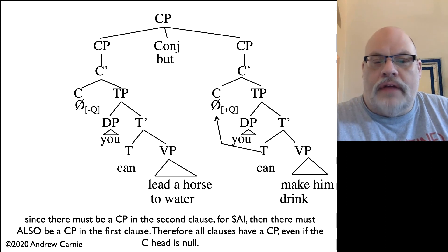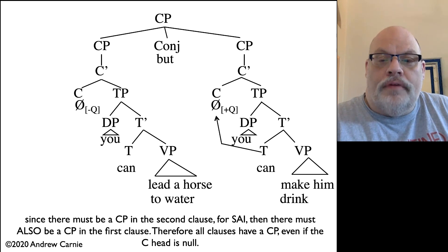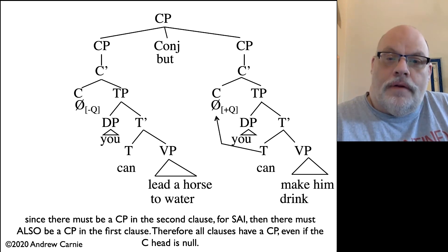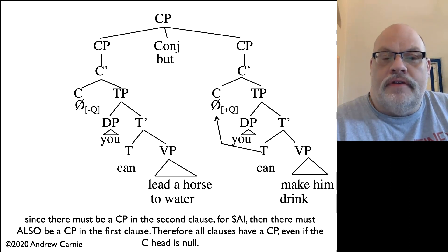Let's see what that would look like in a tree. We've got this tree here where we've got the subject aux inversion, can you make him drink, in the right-hand portion of the tree, where the T node is moving into the complementizer position to give you the subject aux inversion. That entails there's a CP. And therefore, what's going to have to be on the left-hand side is also a CP. It's just a minus Q complementizer, which does not trigger subject aux inversion.